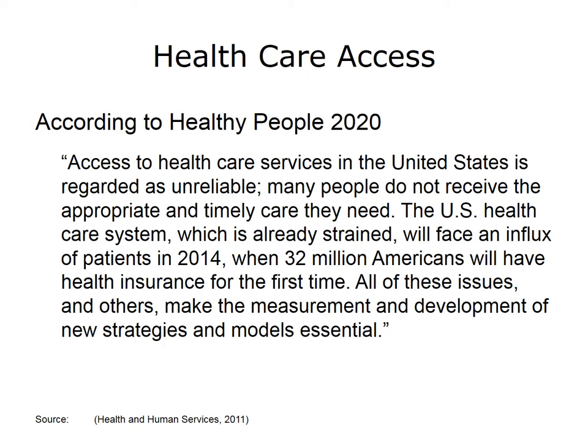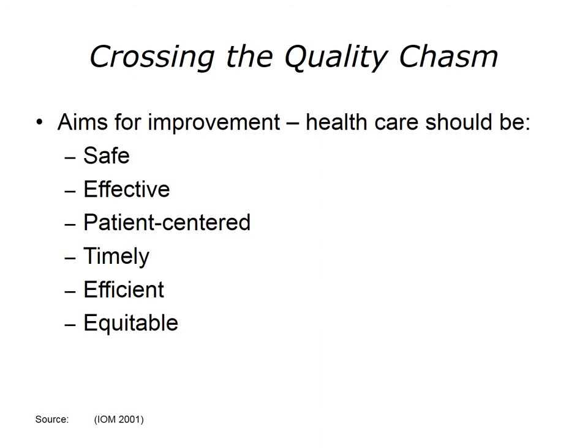We will now discuss the findings of the Crossing the Quality Chasm report. The IOM, in its Crossing the Quality Chasm report, provided six aims for transforming the U.S. health care system. Health care should be safe, that is, it should avoid injuries to patients from care that is intended to help. Effective, and provide services based on scientific knowledge to all who can benefit, and avoid providing services to patients who will likely not benefit. Patient-centered, which means providing care that is respectful of and responsive to individual patient preferences, needs, and values.